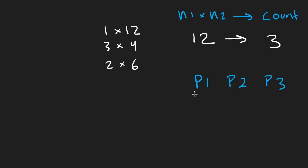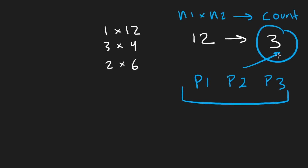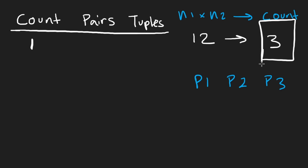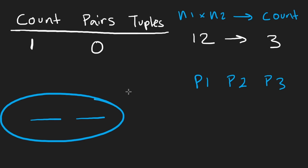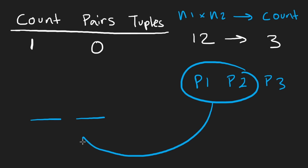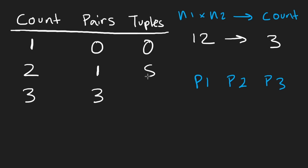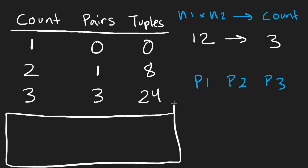Let me build a table to summarize. If the count is 1, we get zero pairs, so zero tuples. Count of 2 gives one pair, so 8 tuples. Count of 3 gives three pairs, so 24 tuples. For count 4: we already had 3 pairs, and introducing P4 adds three more (P4&P1, P4&P2, P4&P3), giving 6 pairs and 48 tuples. For count 5: introducing P5 adds four more pairs, giving 10 pairs and 80 tuples.